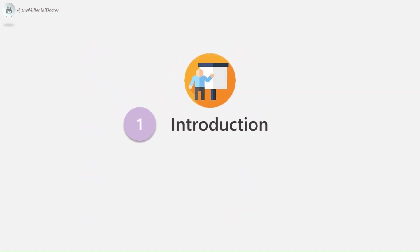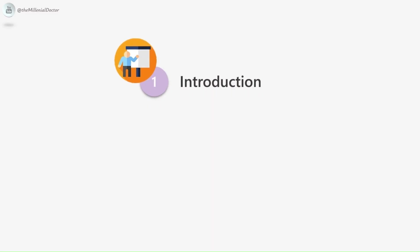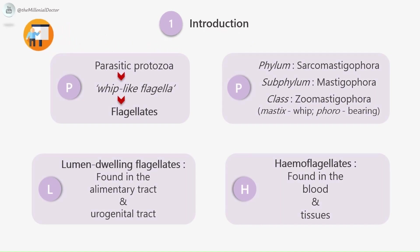First, the introduction. Parasitic protozoa which possess whip-like flagella as their organs of locomotion are called flagellates.